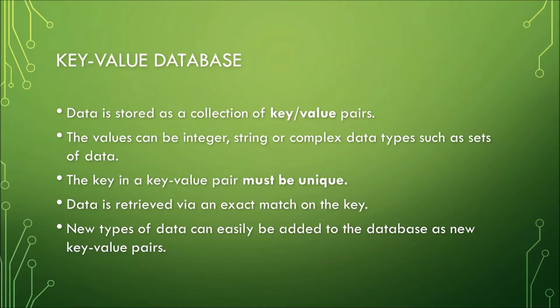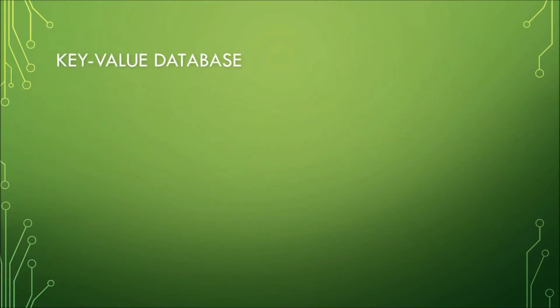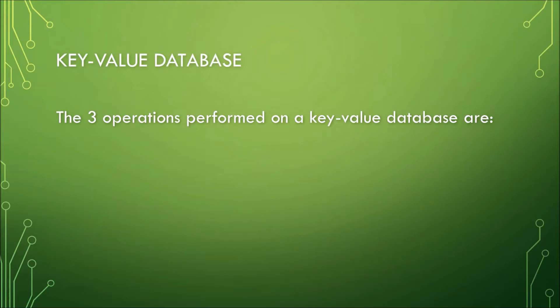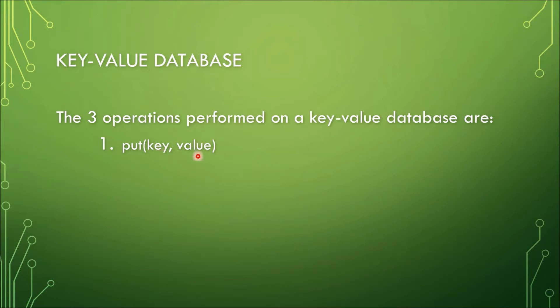One advantage of key-value databases is that new types of data can easily be added to the database as new key-value pairs. There are three operations performed on a key-value database. The first operation is PUT — PUT adds a new key-value pair. You pass a key and a value to the table. PUT can also update a value if the key is already present.